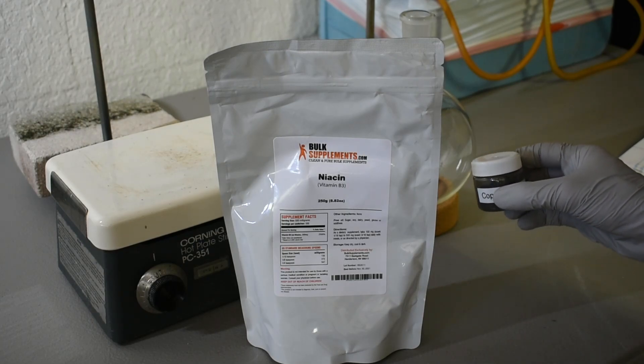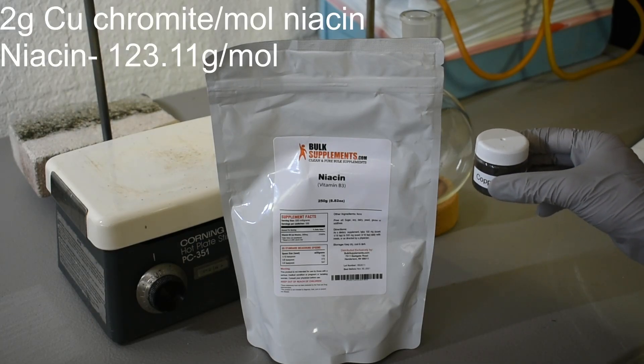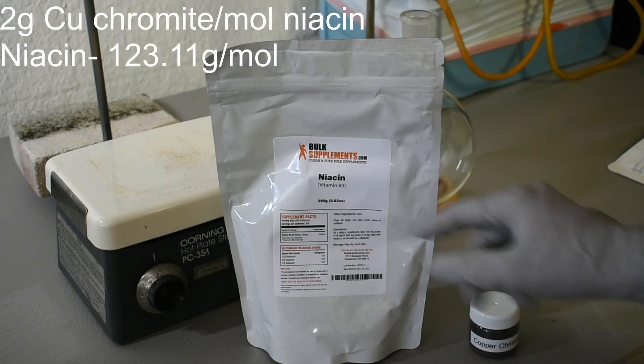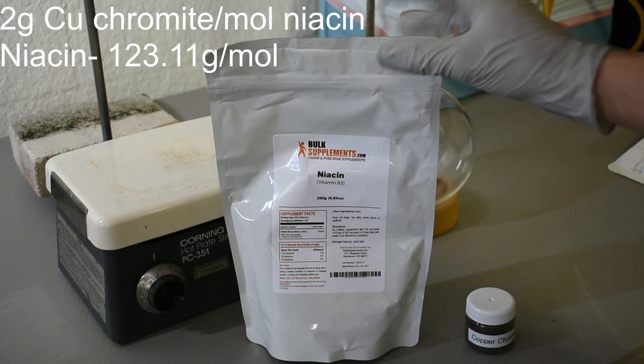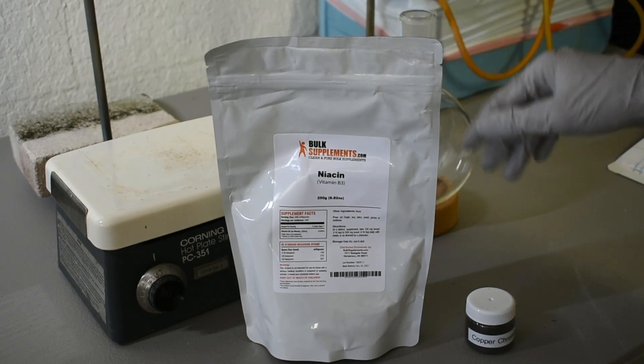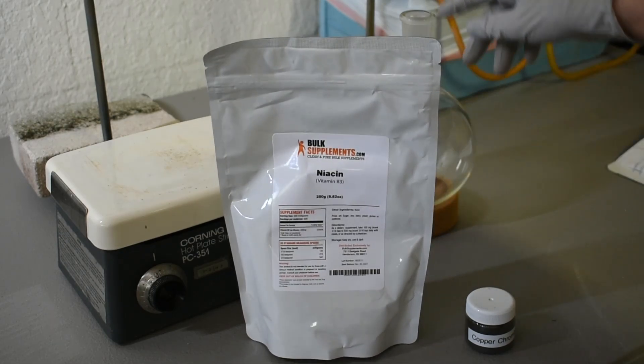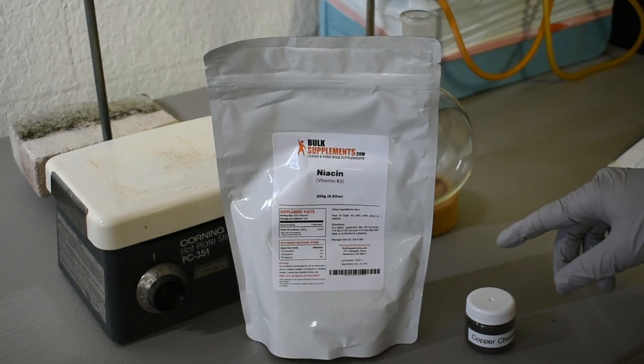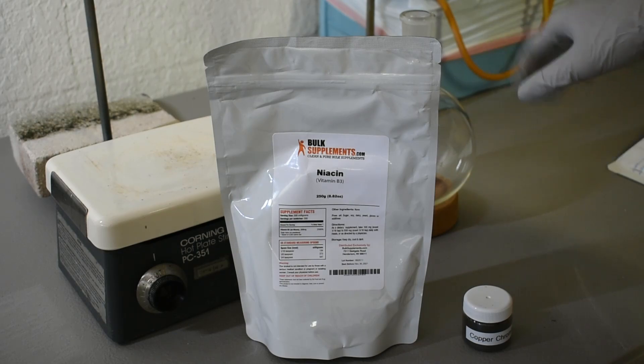You need approximately 2 grams of copper chromate per mole of niacin for the decarboxylation. I'm going to load the niacin into the flask, then put the copper chromate in there, shake it around, and we'll set up for distillation.